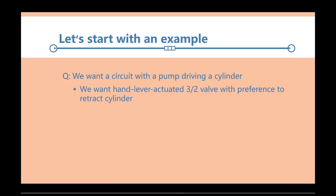And what we'd like to have is a hand lever actuated 3x2 valve with preference to retract the cylinder. So what 3x2 means is that you have three connections to the valve from external tubes coming into the valve, and the valve has two envelopes or two positions.